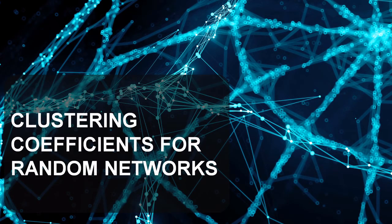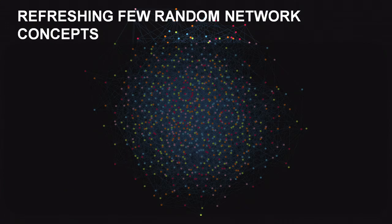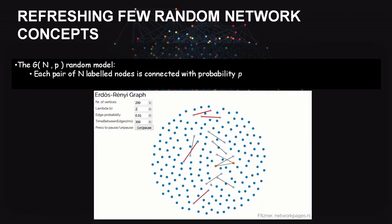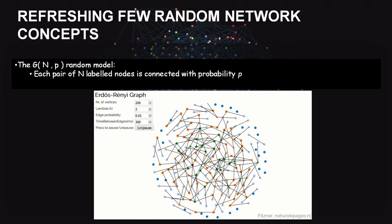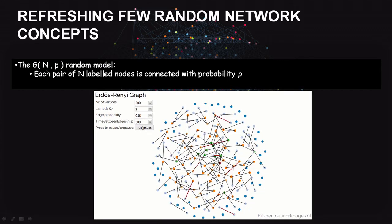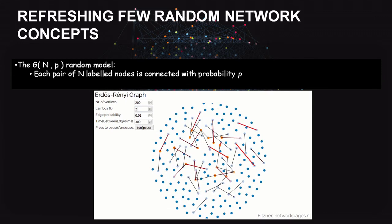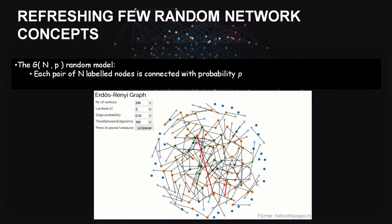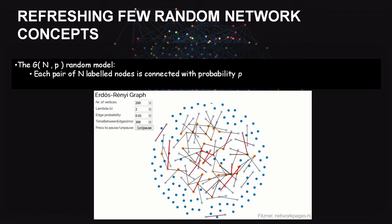Clustering coefficients for random networks: we use the G(n, p) model, where probability p is fixed and n determines the number of nodes. Each pair of n labeled nodes is connected with probability p, meaning an edge can exist between any pair of nodes with probability p. Visually, with edge probability 0.01, we can see how the random graph is generated step by step — an edge is created between any two vertices randomly with probability 0.01.